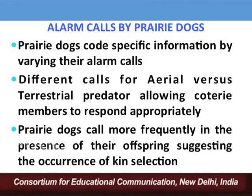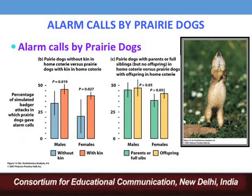These prairie dogs encode specific information in their calls, and it has been observed that they call more frequently whenever they are in the presence of their offspring or very closely related individuals like parents, brothers, sisters. Studies have shown very clear evidence of kin selection: when prairie dogs are present in the coterie without kin, they produce fewer alarm calls, but when they are present with their kin, they produce a higher frequency of alarm calls.